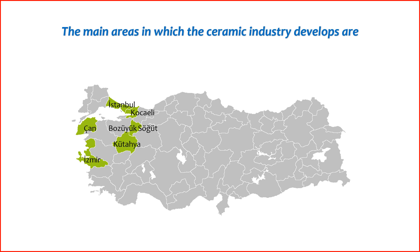2. Izmir — located in the Aegean region, is another important hub for the ceramic industry. The city hosts various ceramic manufacturers, contributing to the overall production capacity of the country. 3. Eskişehir — situated in the northwest of Turkey, has a growing ceramic industry. The city is known for its expertise in ceramics and has attracted investments in the sector. 4. Sakarya — part of the Marmara region, has witnessed the establishment of ceramic factories producing tiles and other ceramic products. The region's strategic location and industrial infrastructure make it conducive to ceramic manufacturing.